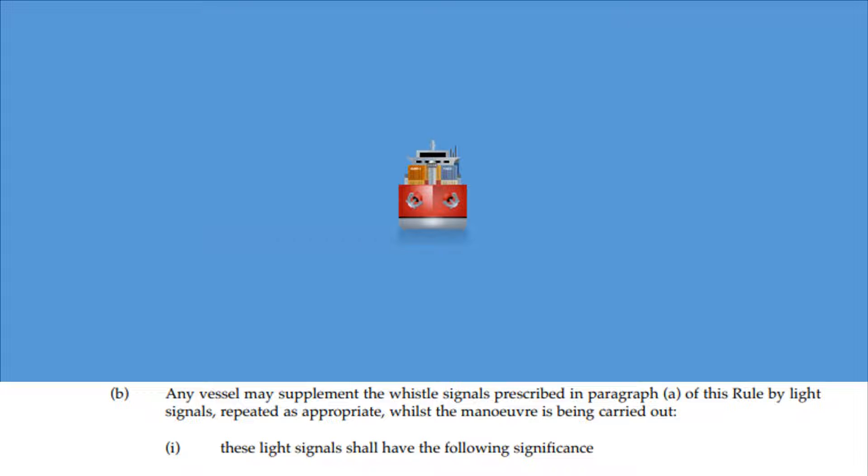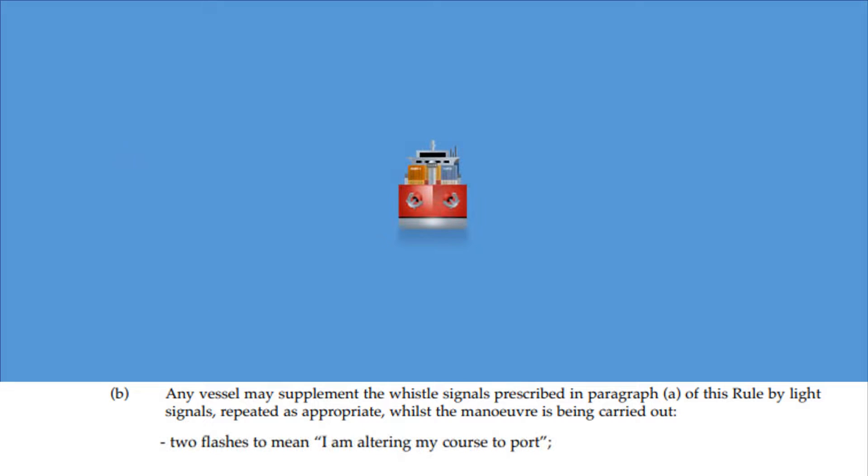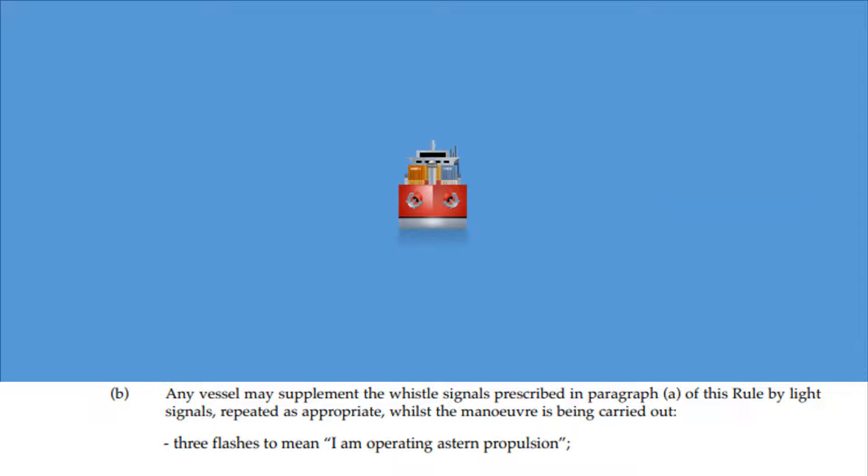One flash to mean I am altering my course to starboard. Two flashes to mean I am altering my course to port. Three flashes to mean I am operating a stern propulsion.